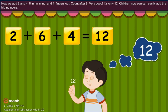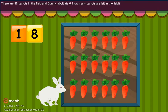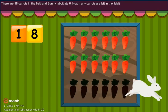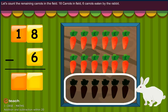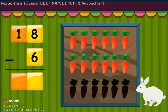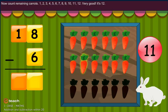Children, now you can easily add big numbers. There are 18 carrots in the field and the bunny rabbit ate 6. How many carrots are there in the field? Let's count the remaining carrots. 18 carrots in field, 6 carrots eaten by the rabbit. Now count the remaining carrots: 1, 2, 3, 4, 5, 6, 7, 8, 9, 10, 11, 12. Very good! It's 12.